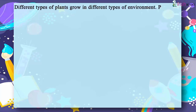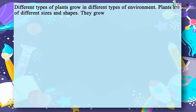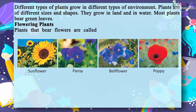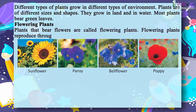Plants are of different sizes and shapes. They grow on land and in water. Most plants bear green leaves. Plants that bear flowers are called flowering plants. Flowering plants reproduce through seeds.